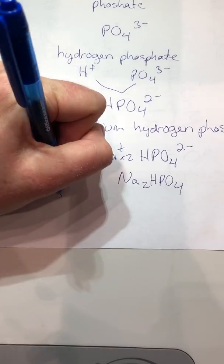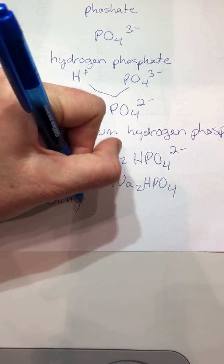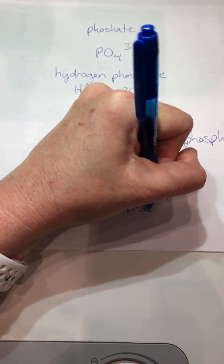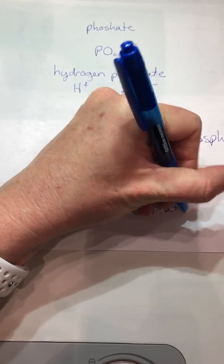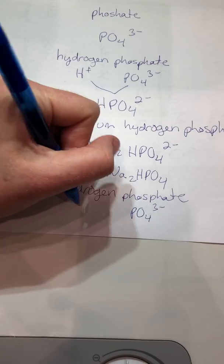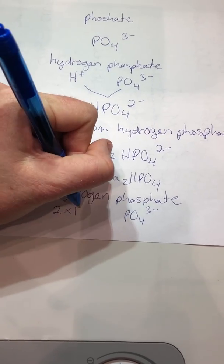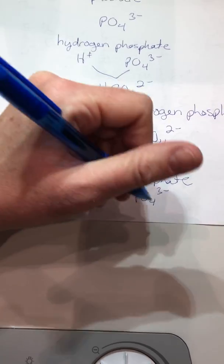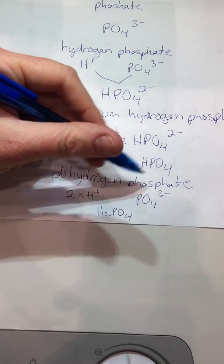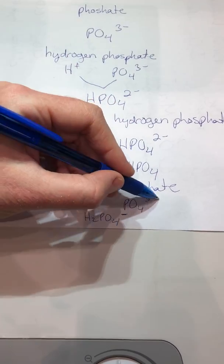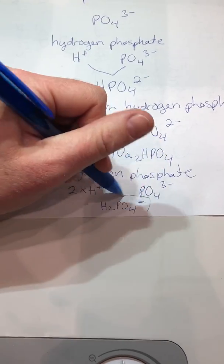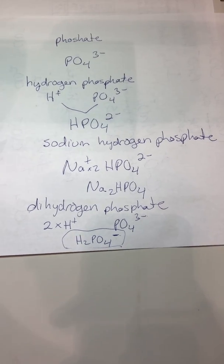Finally, you might have something like dihydrogen phosphate, which is as simple as it sounds. Phosphate, again, is PO4 with three minus charge. Dihydrogen, now what you're doing is you're adding two H+s. So essentially, it's going to be H2PO4 and now the charge is just going to be simply negative because we've got a three minus and we're adding two positives to it. Our overall resulting charge is negative one. And that is all.